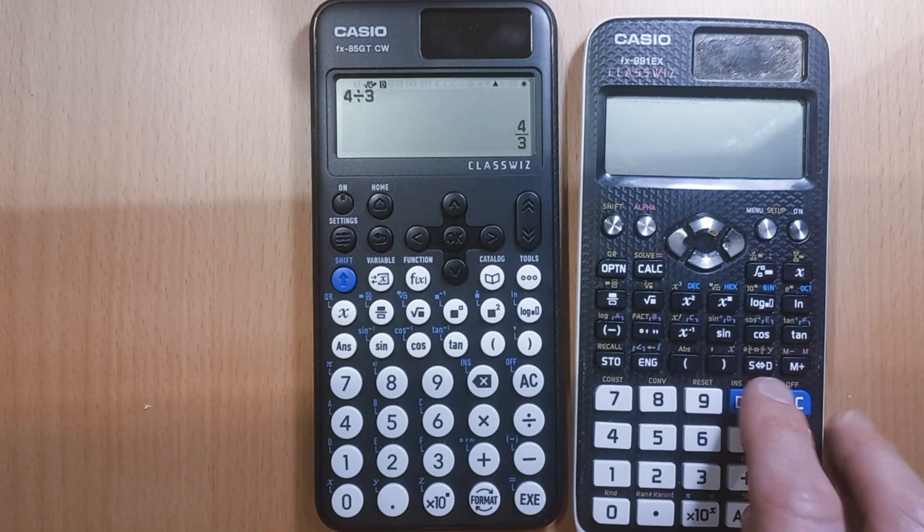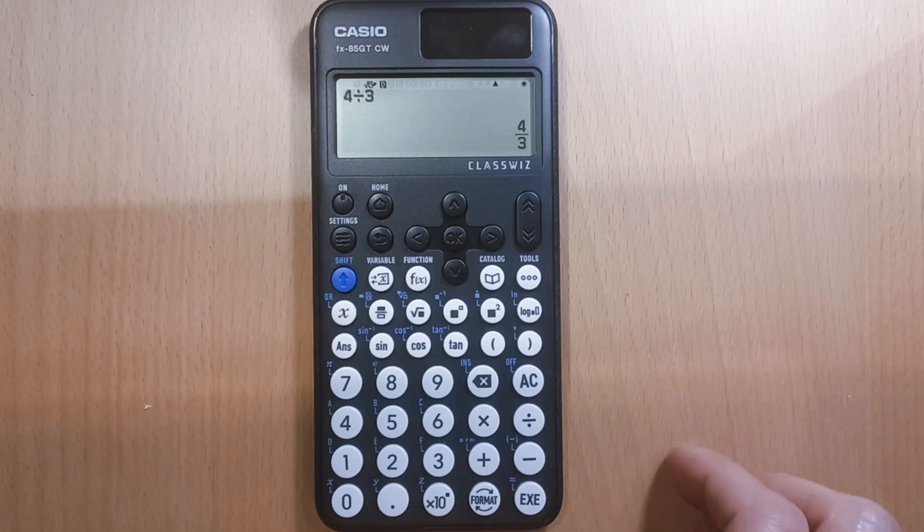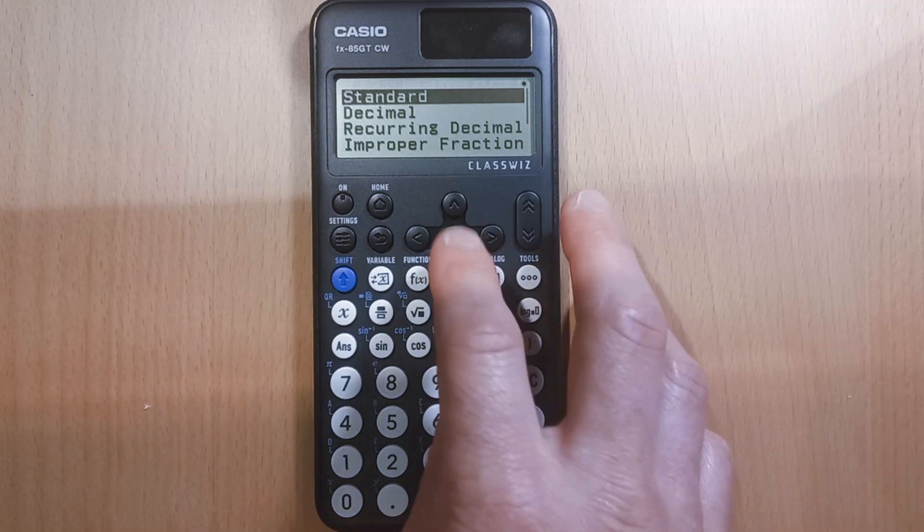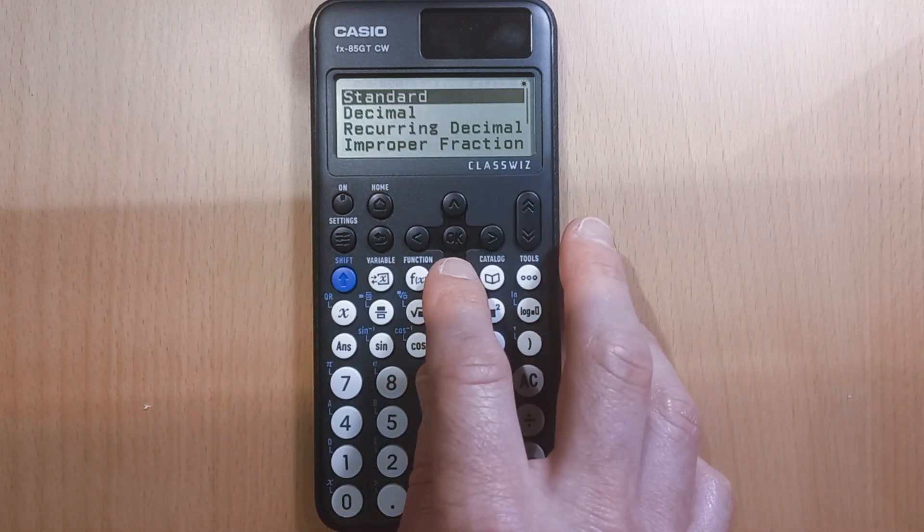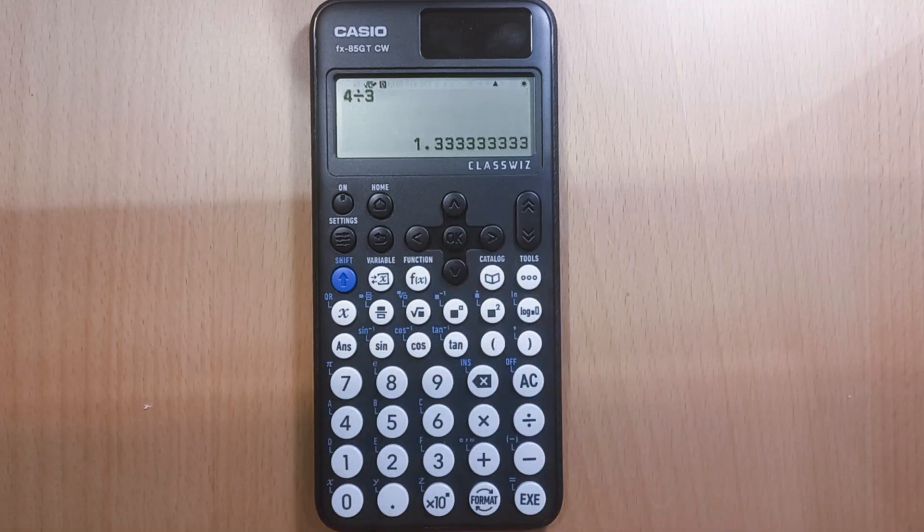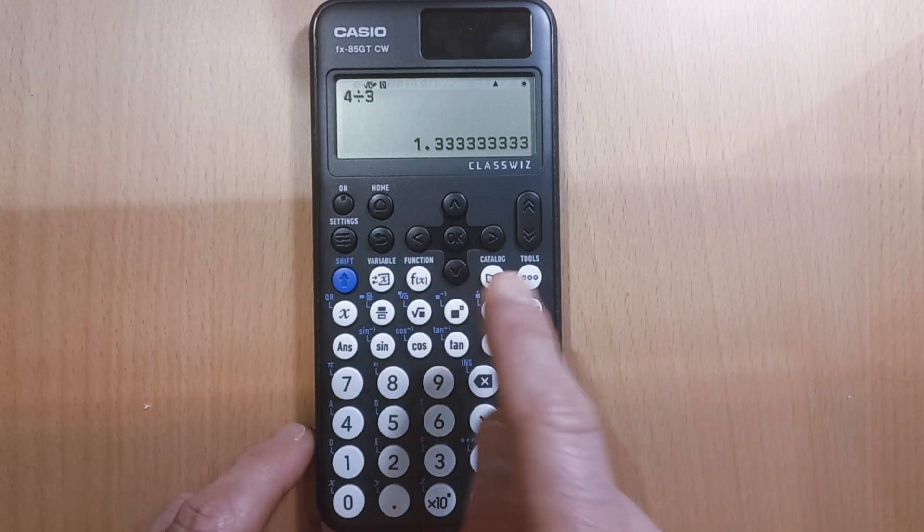Now we need to use this format button. So you press format—standard will keep it as a fraction. What we want is as a decimal, so click OK. We've now got it as a decimal. What's quite handy with those options is that some of the other formats might be useful.